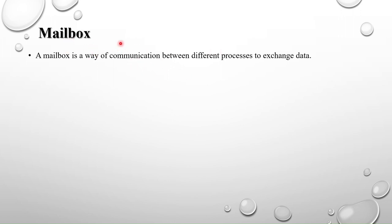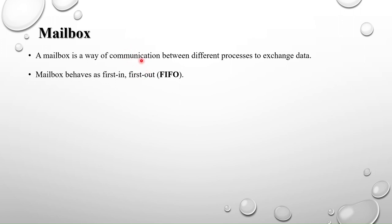The difference between the post box and this mailbox is the way of accessing. The mailbox behaves as a first-in first-out order — whatever data you put in first, you get out first. In a post box, you can get any letter randomly based on the address, but in a mailbox it follows the first-in first-out order.